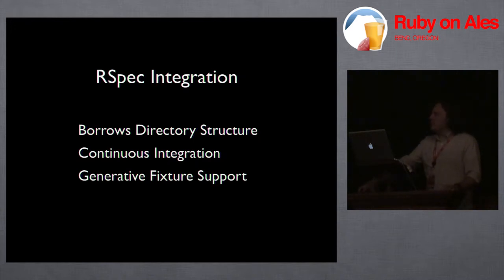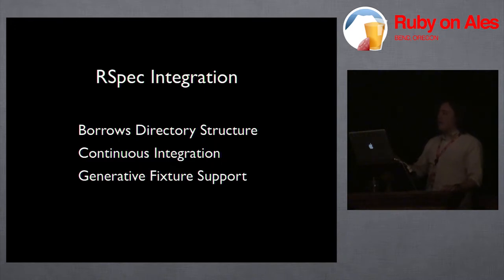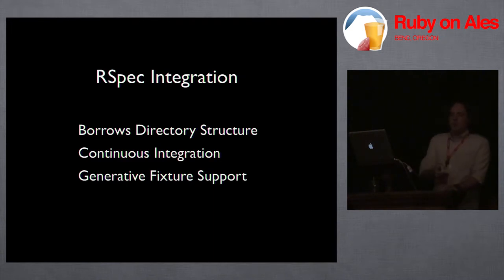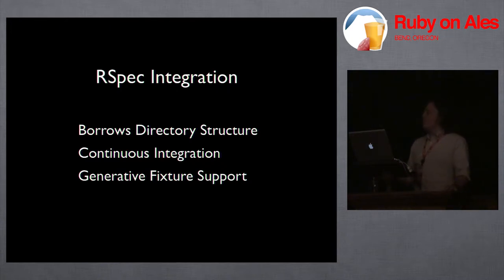One cool feature recently added is that if you're using RSpec controller tests with view integration turned on — actually running the controller action and generating the view — it will take the output from the view and write it to disk, tucked away in your tmp file. When you run your Jasmine specs later, Jasmine will look in your temp directory, find those saved markup files, and use them. So if you make a change to your view and forget to make a similar change to your JavaScript files, you're going to see a test failure and find out immediately that you need to update your JavaScript.